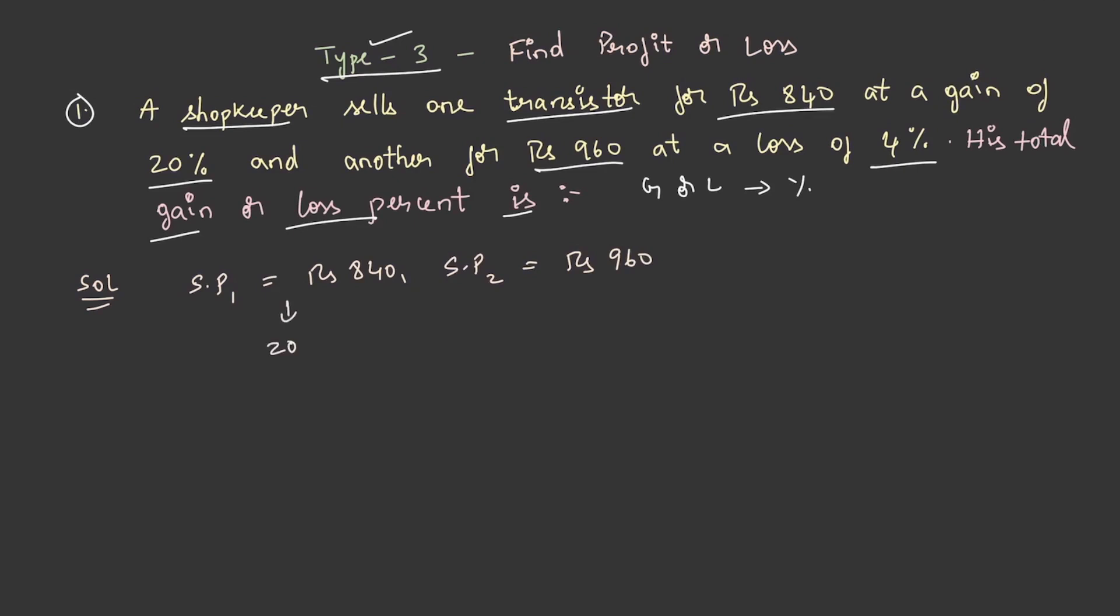In the first case there has been 20 percent gain and in the second case there has been a 4 percent loss. If we know the gain percentage as well as the selling price, there is a formula to find out the cost price. Cost price is equal to 100 by 100 plus gain percent into selling price.